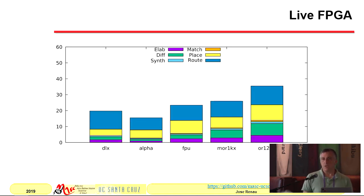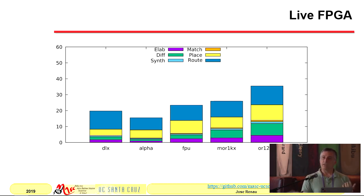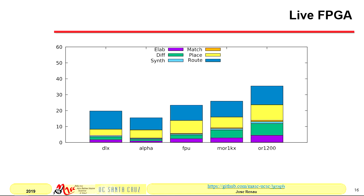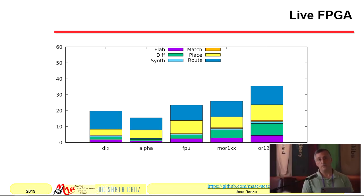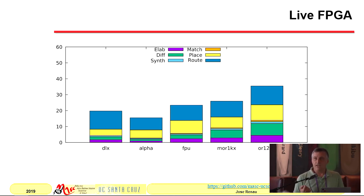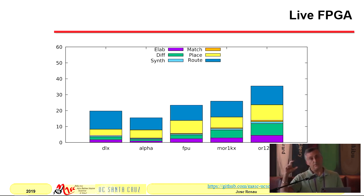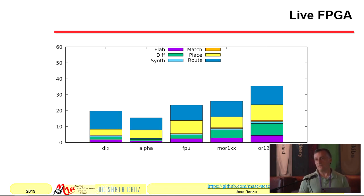Another area in which we have been applying this — recently accepted for DAC this year — is incremental placement and routing with the Vivado flow. At the time we didn't have RapidWright. But here again, just to show you, the y-axis is in seconds. So in a few seconds, we can regenerate many designs up to place and route. If you notice the colors, a big chunk of the time is elaboration — reading the Verilog. The fact that elaboration is such a big part of the pie is not that we have slow elaboration; it's that the other things are very fast. Now elaboration is showing up, so we are starting to work on faster elaboration.